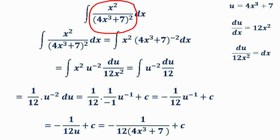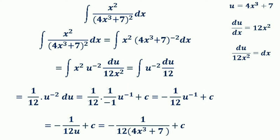Now we have another example in the form of a quotient: the function is x² divided by (4x³ + 7)². We are going to integrate this function using the substitution method. The integral is ∫x²/(4x³ + 7)² dx. We rearrange by moving the denominator to the numerator, changing the exponent sign to −2. It becomes ∫x²(4x³ + 7)⁻² dx.